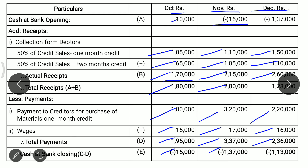The negative Rs. 1,37,000 is the opening balance for December. Actual receipts for December are Rs. 2,60,000. Subtracting the opening deficit gives Rs. 1,23,000 total receipts. Total payments for December are Rs. 2,36,000. Rs. 2,36,000 minus Rs. 1,23,000 gives a negative closing balance of Rs. 1,13,000 for December. This is the maximum overdraft facility required. Thank you.